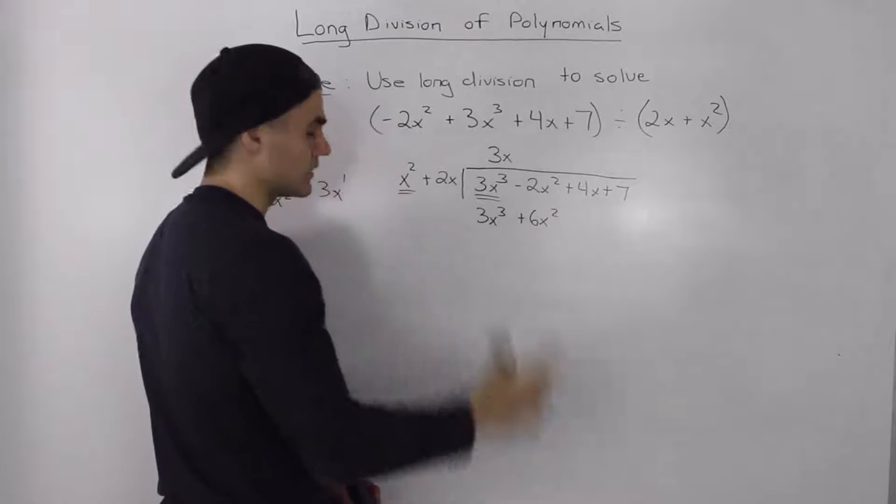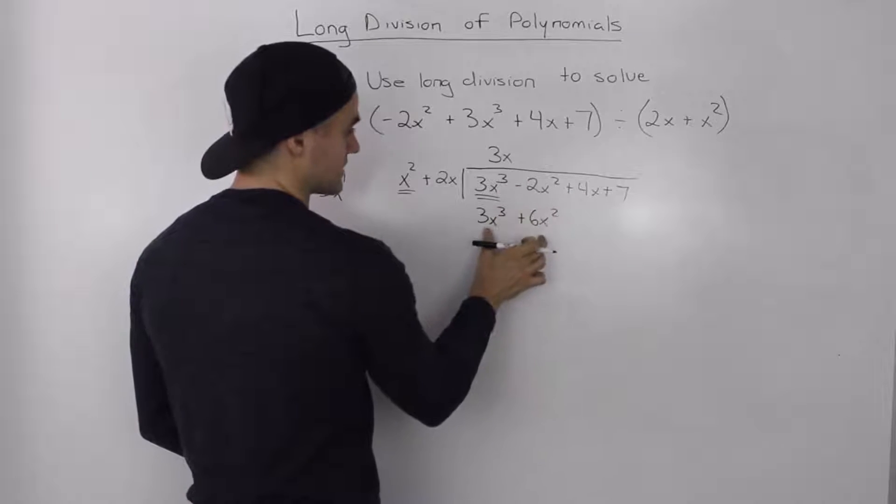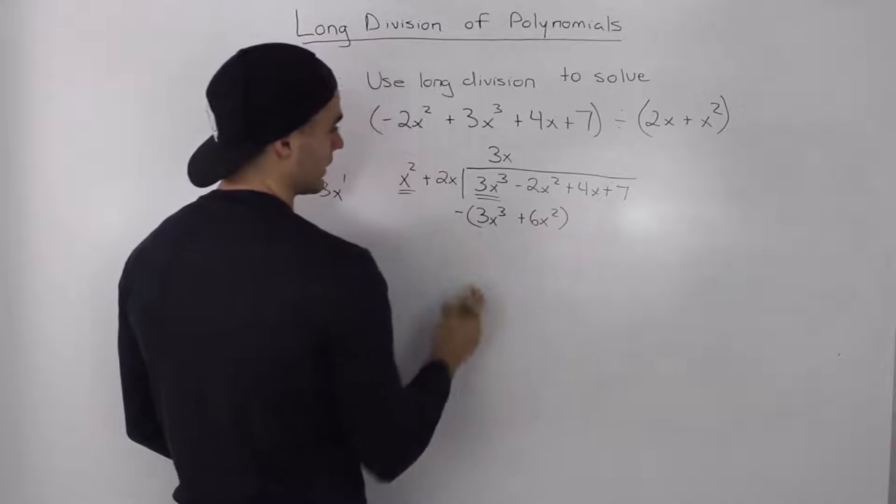And now, as we've been doing in the examples before, we subtract the dividend. We subtract this term from the dividend. So I like to put a bracket here and a negative sign.